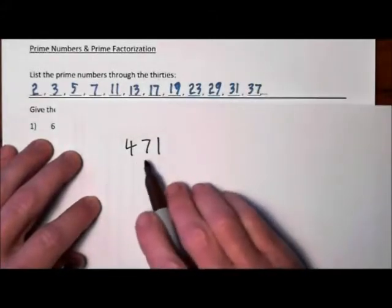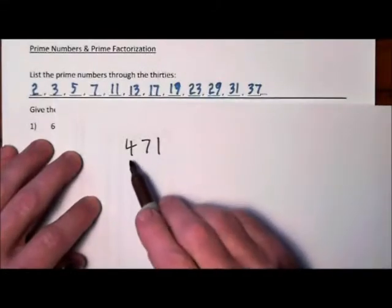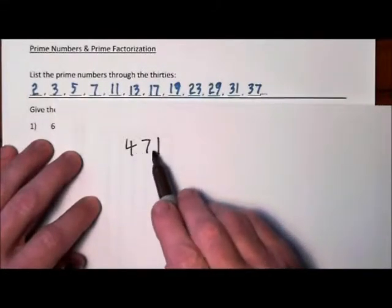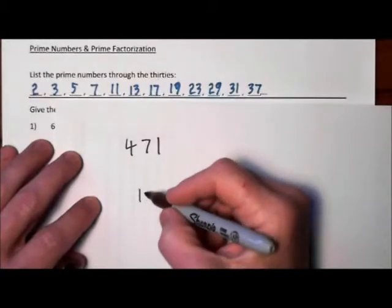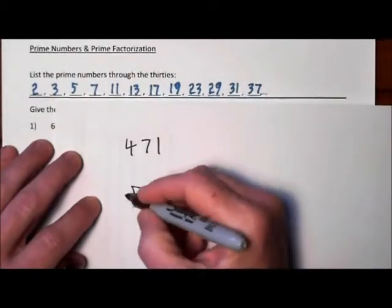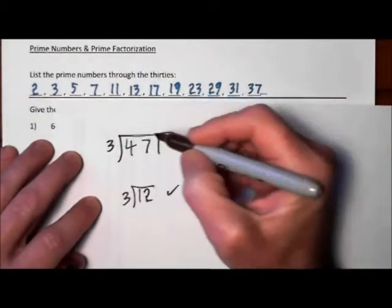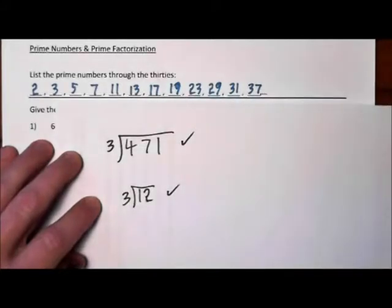In a few seconds, I can tell you whether or not 3 divides in evenly, simply by adding the digits. 4 plus 7 plus 1 is 12. 12 is divisible by 3, so 471 is divisible by 3.